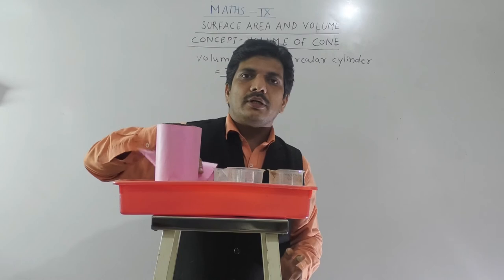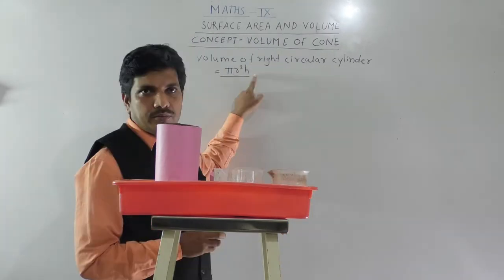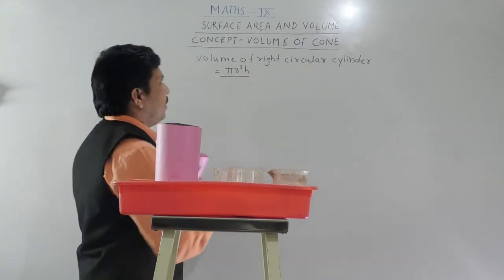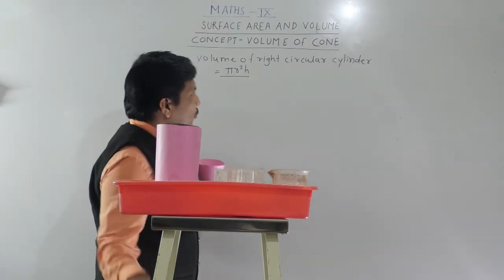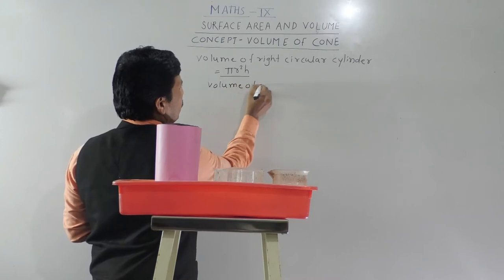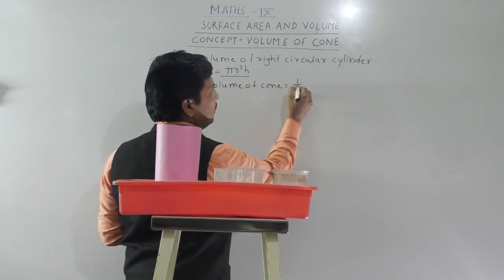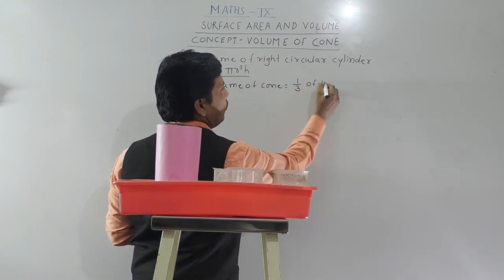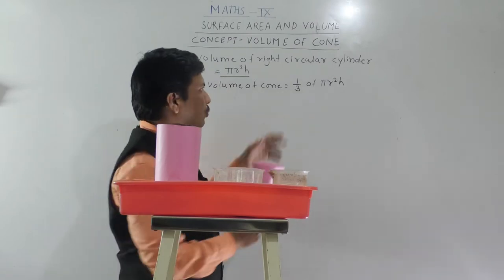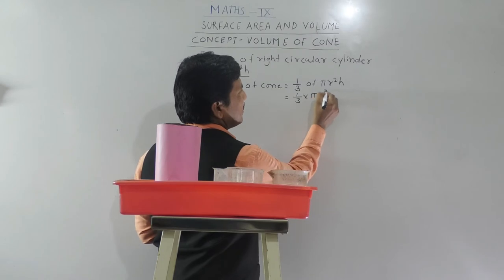How many times have I taken the cone? Three times. In short, we can say the volume of the cone is one third of the volume of the cylinder. So volume of cone equals one third of pi r squared h, which we can write as one by three into pi r squared h.